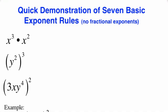The first thing we have is the product rule. If you have x cubed times x squared, what would you expect the answer to be? Now we're going to actually demonstrate why these rules are the way they are, so we're going to do this manually, but at the very end we're going to show you all the rules in a recap.